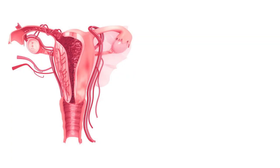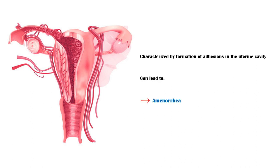Asherman syndrome is a rare condition characterized by formation of adhesions in the uterine cavity, which can lead to absent menstruation, or amenorrhea, and subfertility.